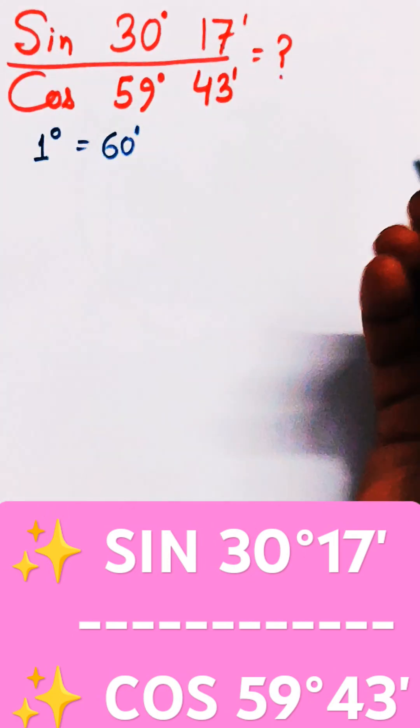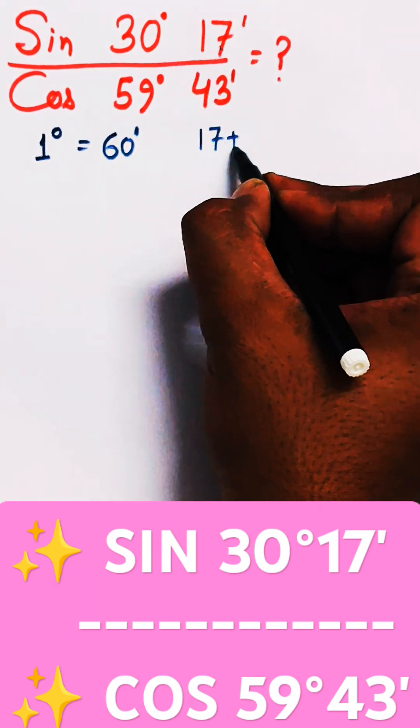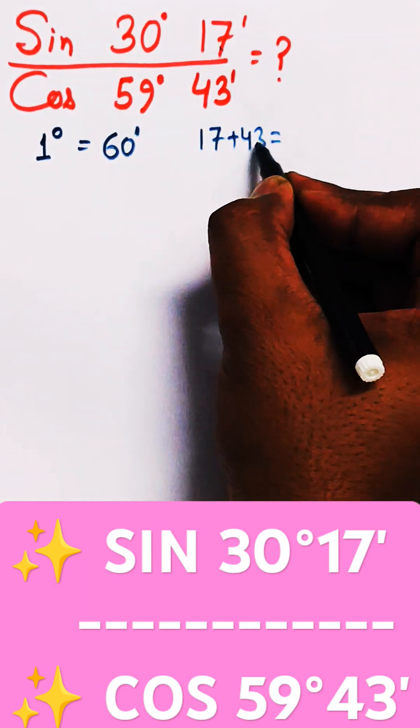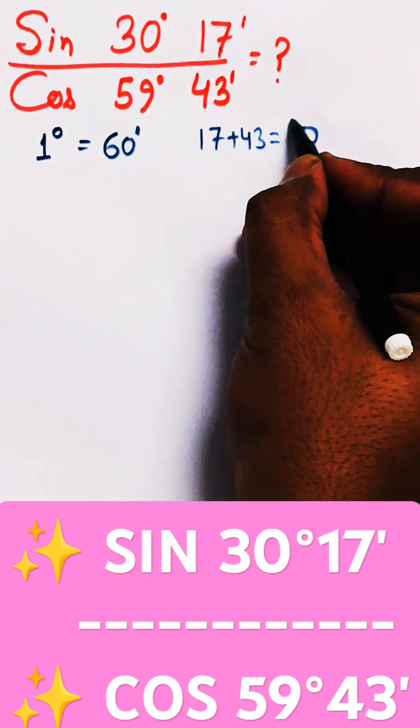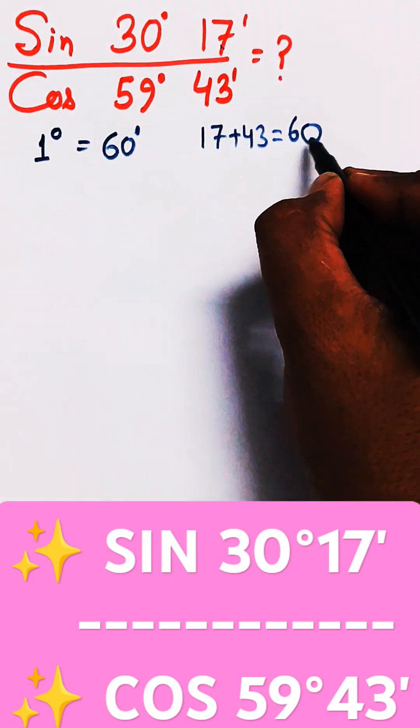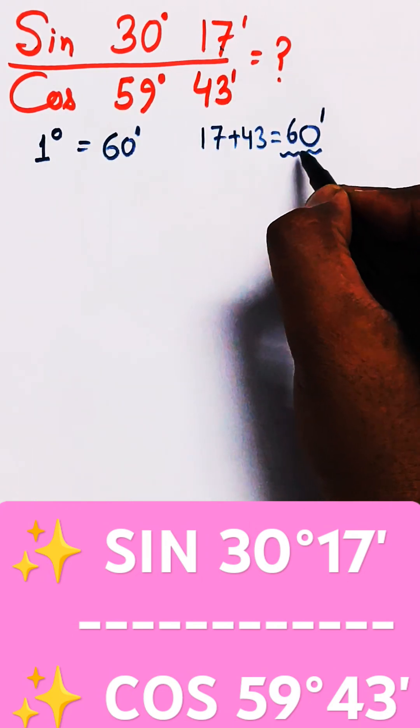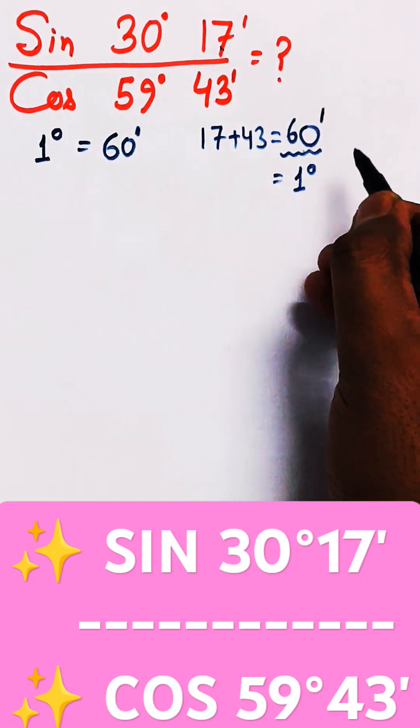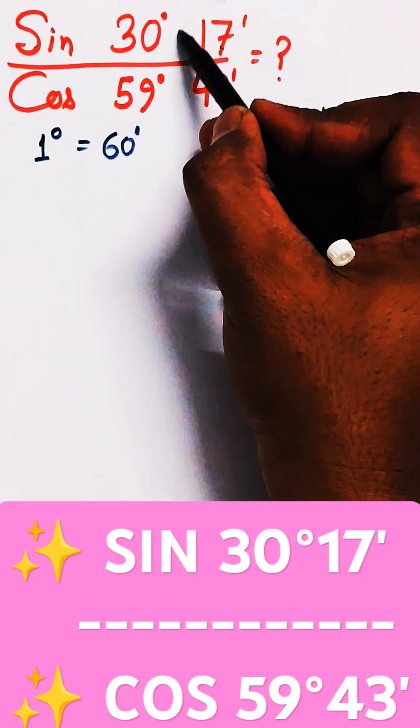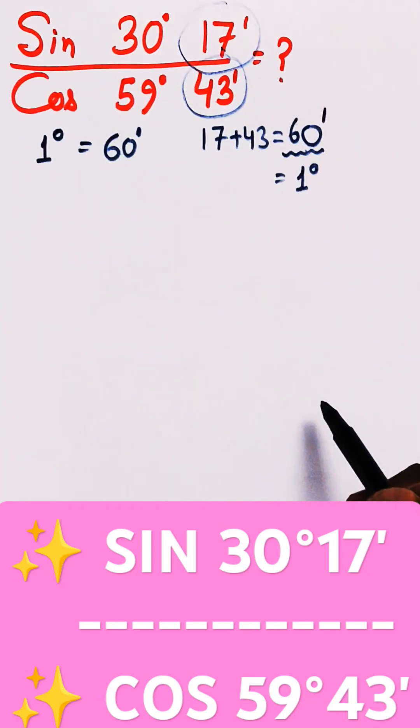Here you can see 17 plus 43. That is 17 plus 43 equals 60. So 60 minutes consist of 1 degree. This means this portion, 17 and 43, will add up to get 1 degree.